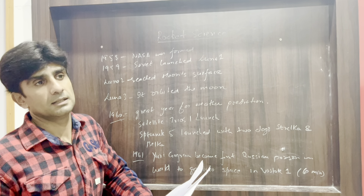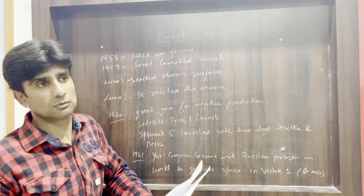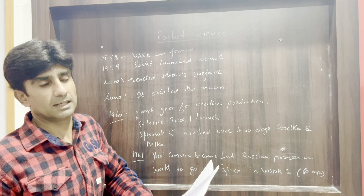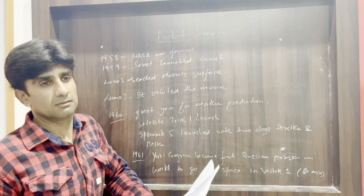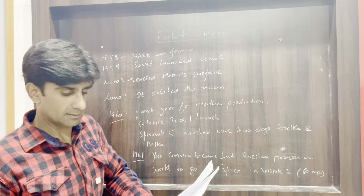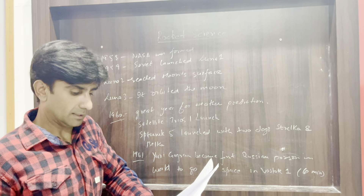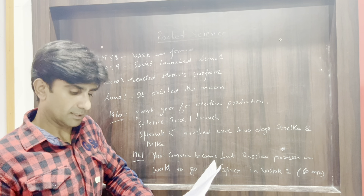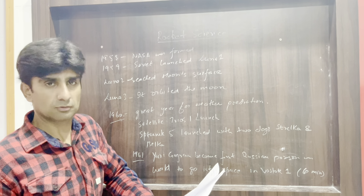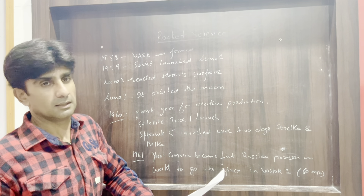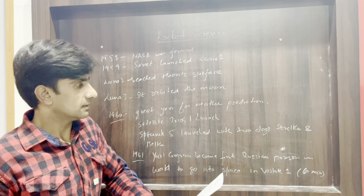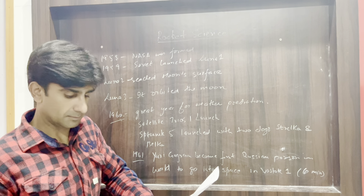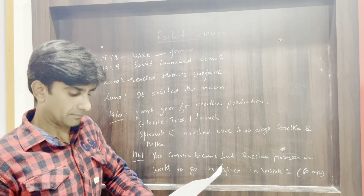The Soviet Union then launched Luna 3, which actually orbited the Moon and sent back pictures of the Moon. In 1960, many satellites were sent into space for weather forecasting. TIROS 1 was sent for television weather purposes, and the first communication satellite, Echo 1, was also launched. Sputnik 5 took two dogs — Strelka and Belka — into space, and they were safely returned to Earth.